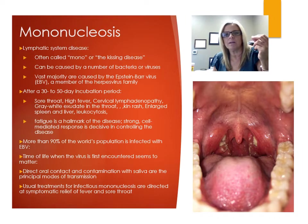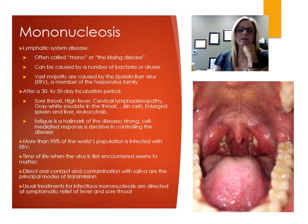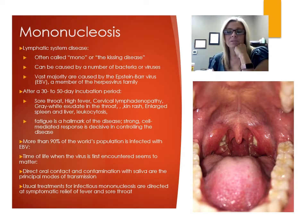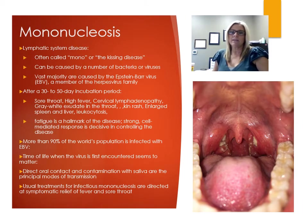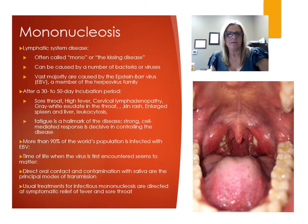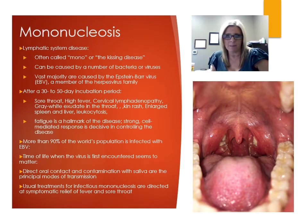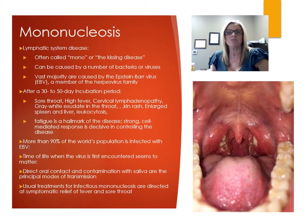Cell-mediated response is important for controlling mononucleosis. About 90% of the world's population has been infected with Epstein-Barr virus, and in general it causes no noticeable symptoms. When you first encounter the virus matters: if infected during the teen years, you develop disease about 25% of the time; before or after that period you're usually asymptomatic. Transmission occurs through direct oral contact and saliva contamination. Treatment is palliative — treating the symptoms. The main concern is rupture of the spleen, which requires immediate surgery.